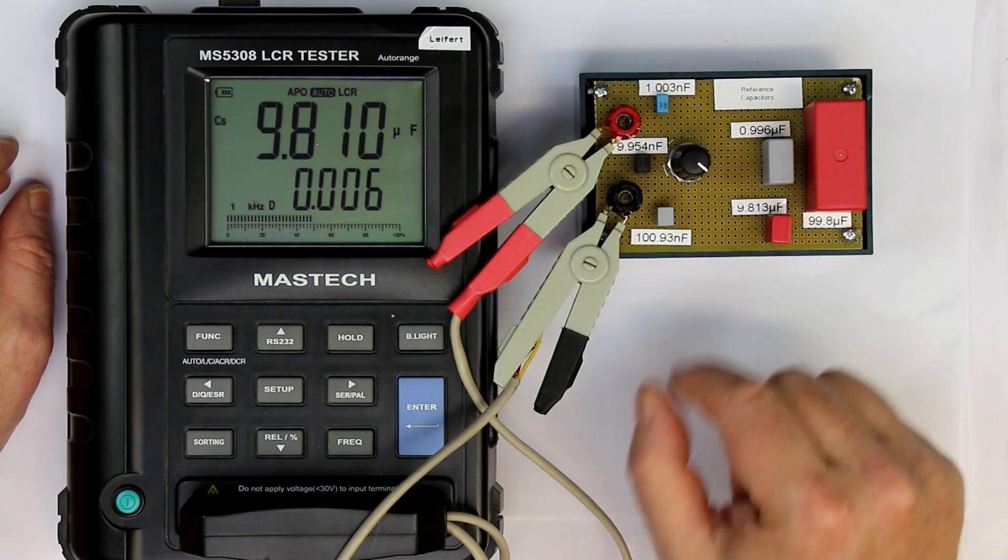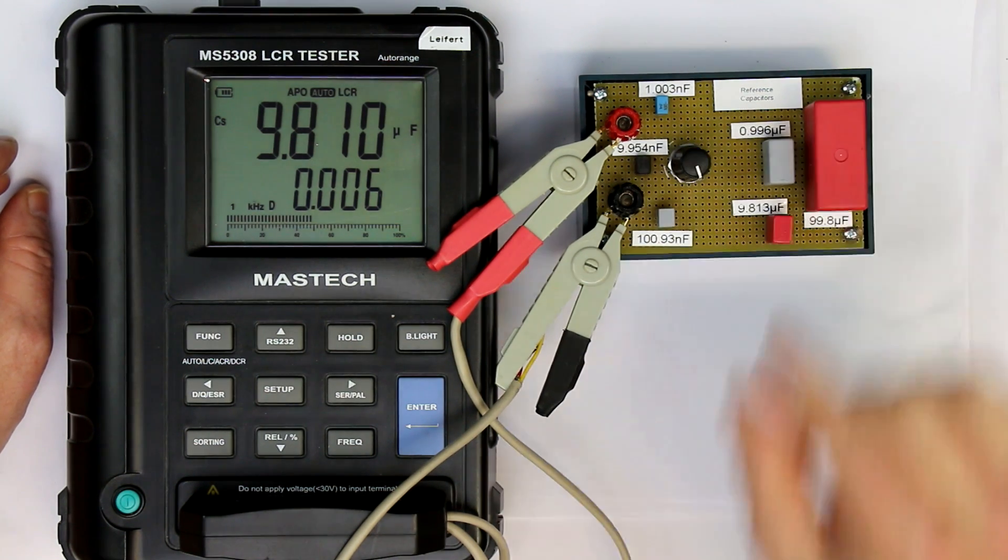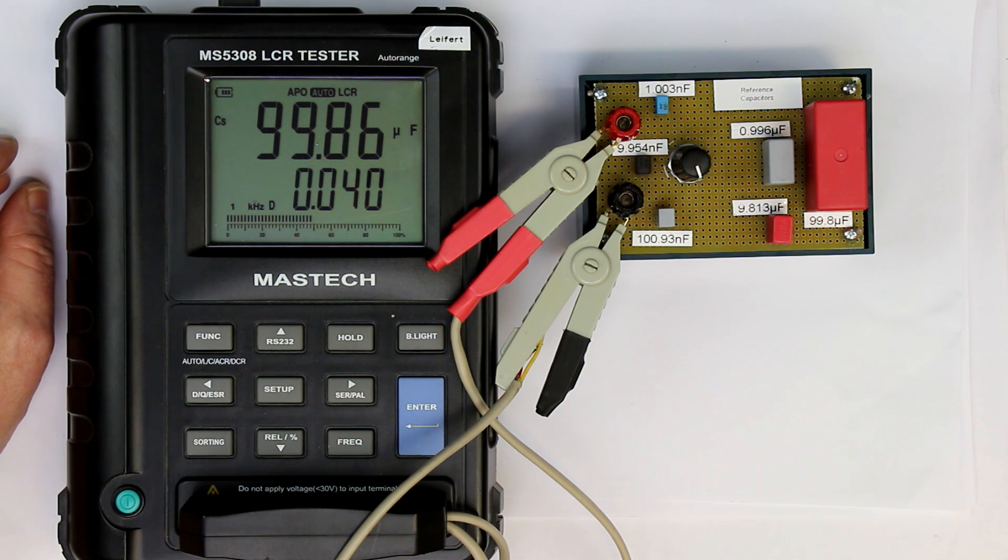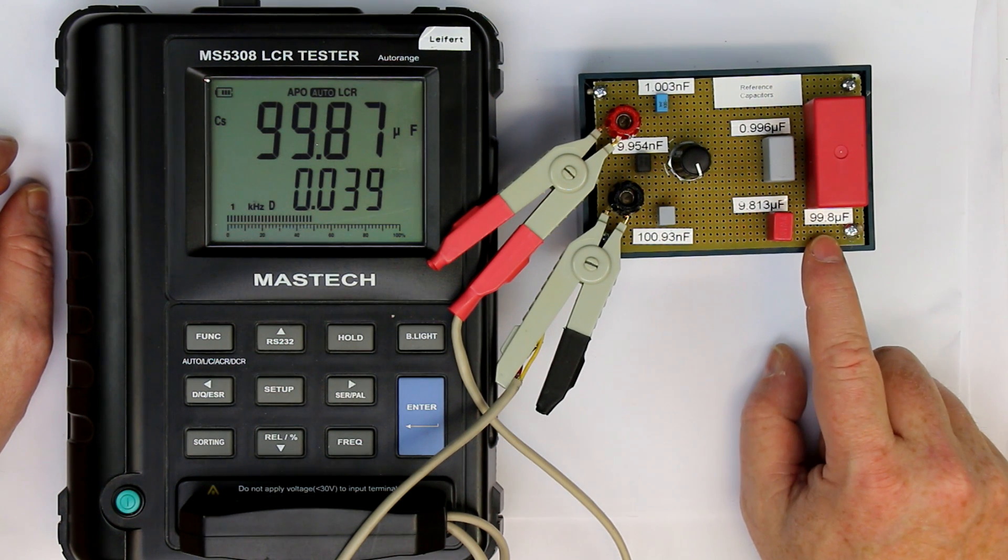And the 100 microfarad also comes with 5%. And we get 99.8. That's better than 1%.